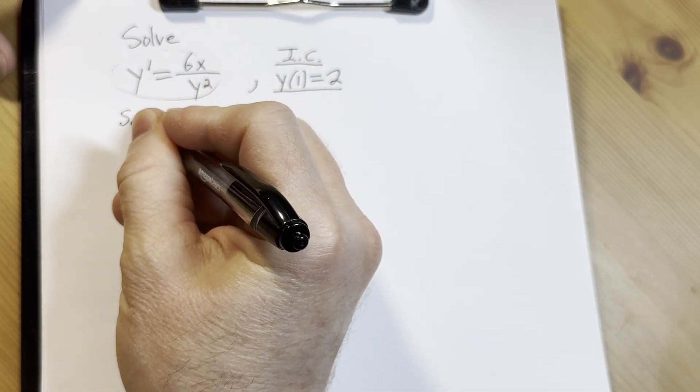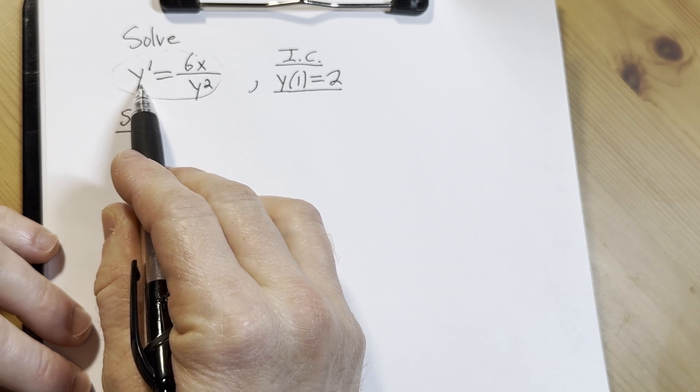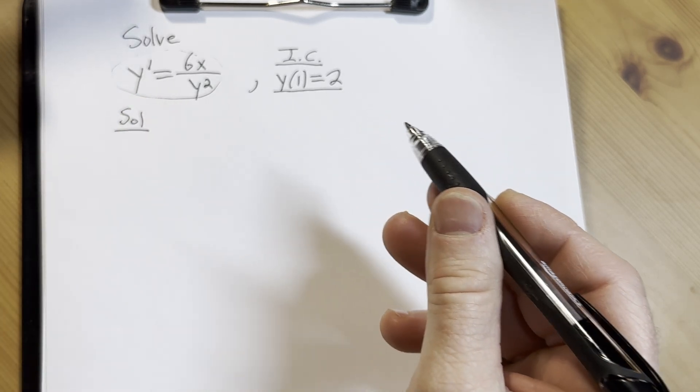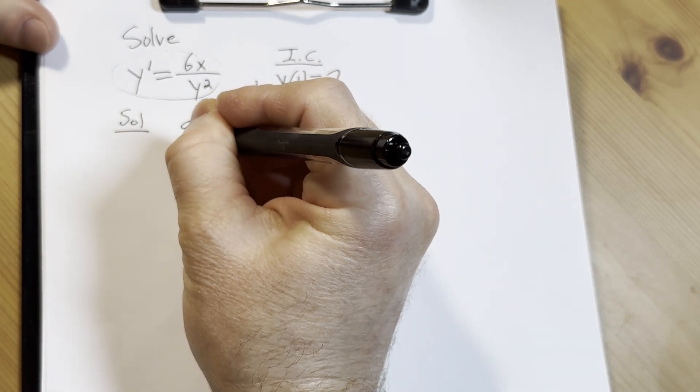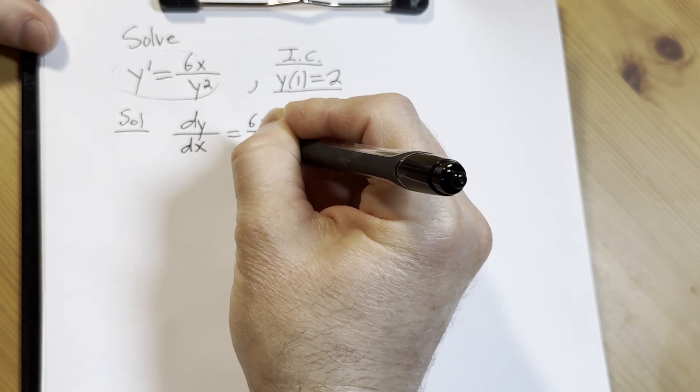All right, let's work through it. Solution. The first thing we want to do is take y' and write it as dy dx. So dy dx is equal to 6x over y squared.